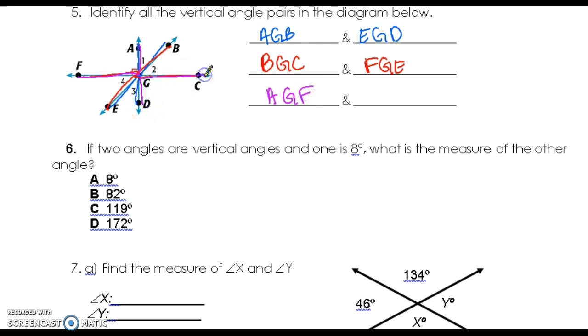If two angles are vertical angles and one is 8 degrees, what is the measure of the other one? Vertical angles are congruent, so that is 8 degrees.